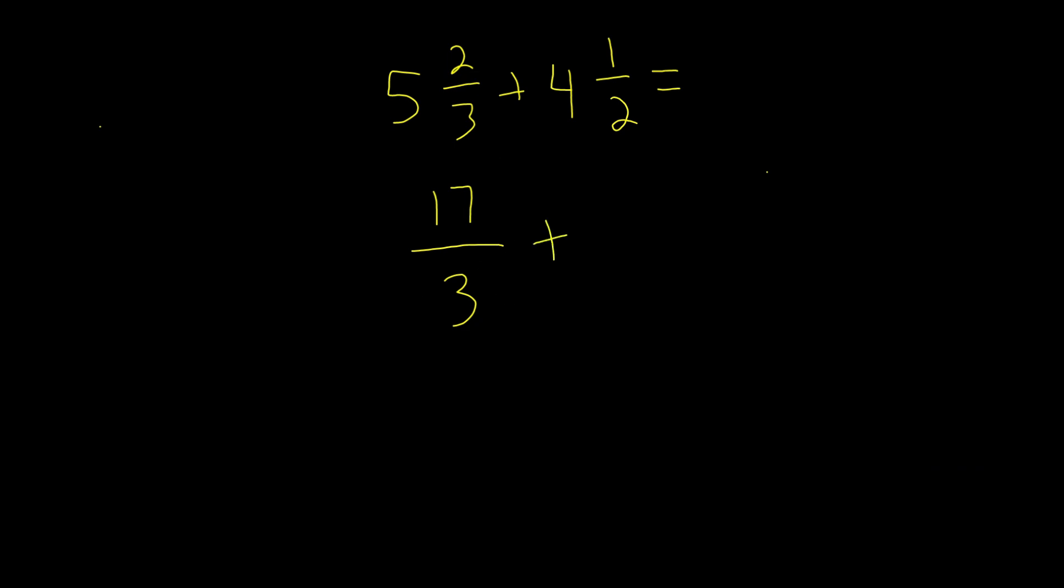And now we're going to add this with, let's convert this into an improper fraction. 4 times 2 is 8, 8 plus 1 is 9. Over, we're going to keep this the same, so 2.